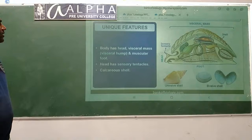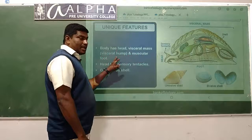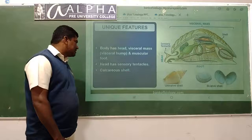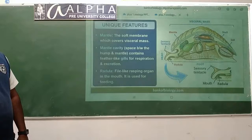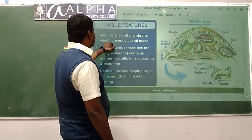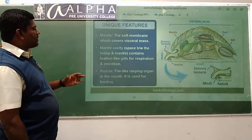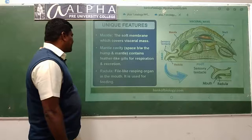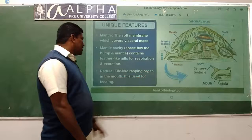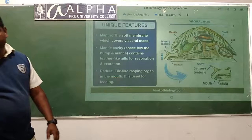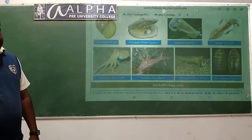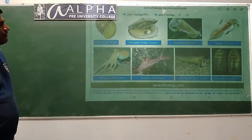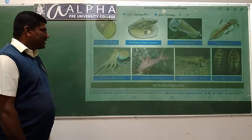Unique features: the body has a head, visceral mass (visceral hump), and muscular foot. Head has sensory tentacles. In some we see calcareous shells which cover the soft body. The soft membrane which covers the visceral mass is the mantle. The mantle cavity - the space between the hump and the mantle - contains feather-like gills for respiration and excretion. Radula is a file-like rasping organ in the mouth used for feeding. Examples: snails, Sepia (cuttlefish), Octopus (commonly called devil fish), and others.